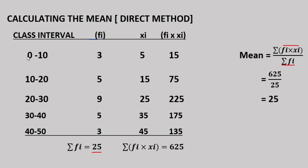The class interval is 0 to 10. We divide: 0 plus 10 is 10, divided by 2 is 5. Then 10 plus 20 is 30, divided by 2 is 15. Then 20 plus 30 is 50, divided by 2 is 25.